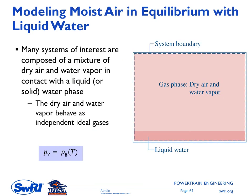In many situations we find a system consisting of a mixture of dry air and water vapor in contact with liquid or solid water. The gas phase — moist air — sits above liquid water. We can still assume the dry air and water vapor behave as independent ideal gases in equilibrium with liquid water. In this case, the partial pressure of the water vapor equals the saturation pressure at the mixture temperature: P-V = P-G.